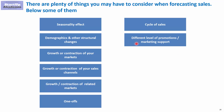It also makes sense, especially in consumer goods, to look at the different levels of promotions and marketing support. In historical data you may have had a different level of promotions than in the future, so you should account for that as well. In a sense this is a kind of seasonality effect, but I would treat it differently because it is not driven by the customer but by decisions made by you and your competitors.